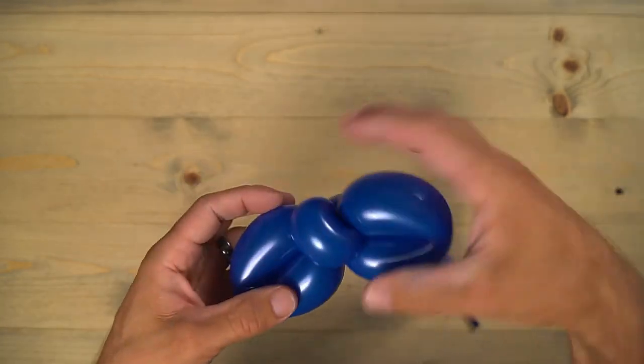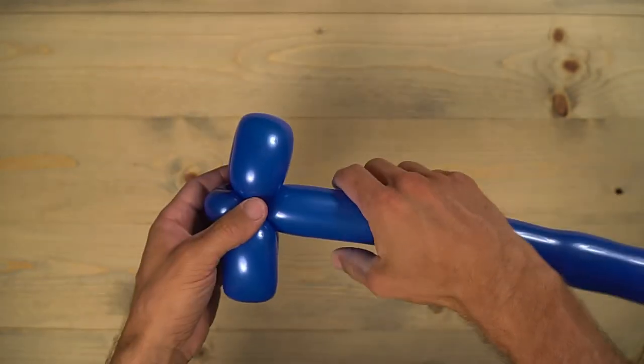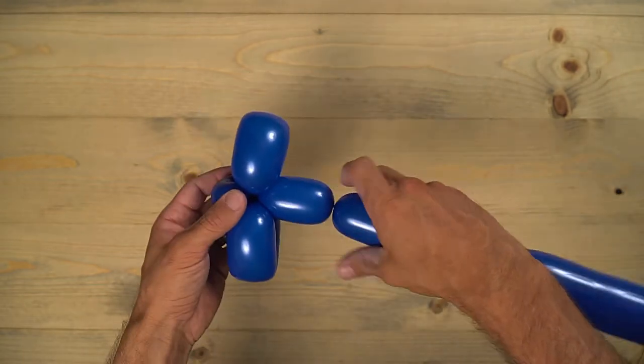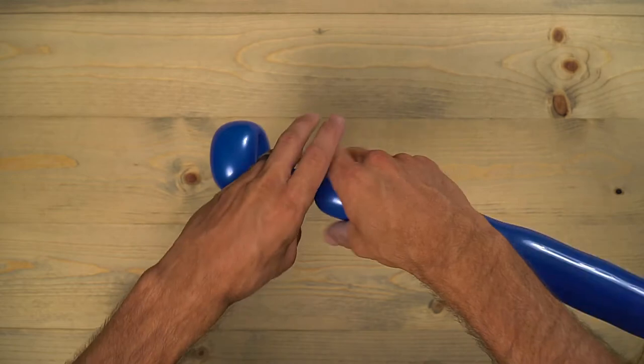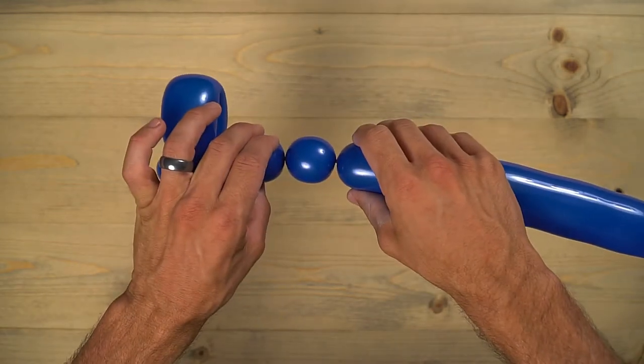Get those in place. And now twist about right here. And then make a one-inch bubble and then pinch twist that. Just like this.